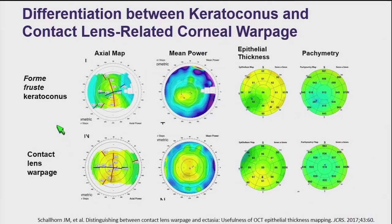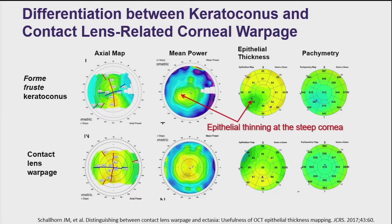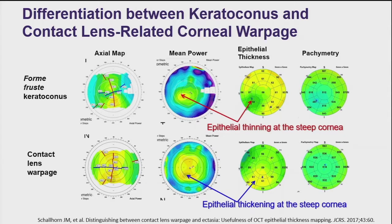Let's come back to distinguishing forme fruste keratoconus from contact lens-related corneal warpage. In ectatic disease, we find that the epithelium is thin at the place of focal steepening — this is secondary epithelial modulation in response to topographic change. In contact lens warpage, dry eye, or EBMD, you will find that topographic steepening is caused by focal epithelial thickening — this is a primary epithelial change. Since the epithelial patterns are opposite, it is easy to distinguish these two types of conditions.